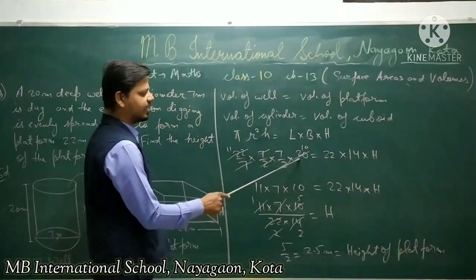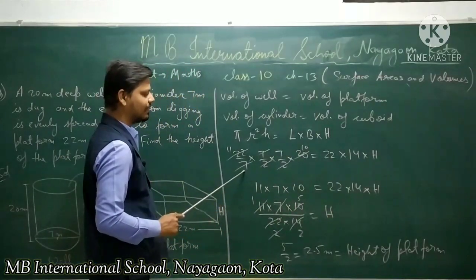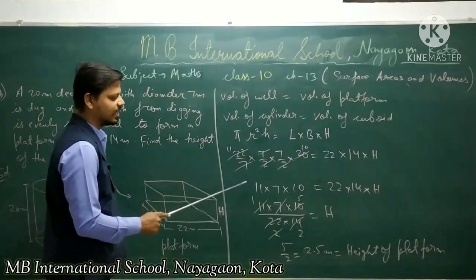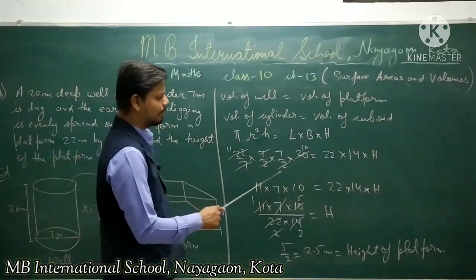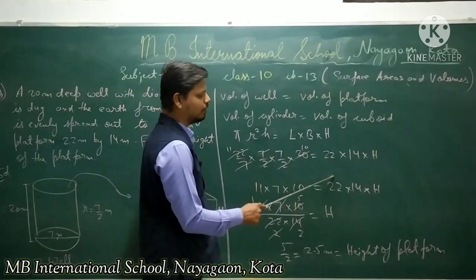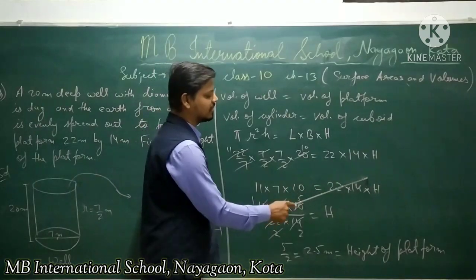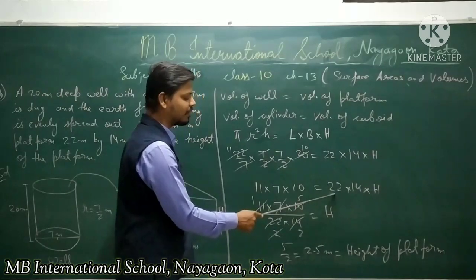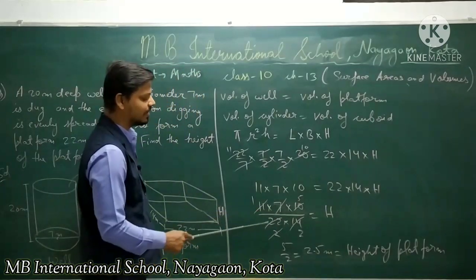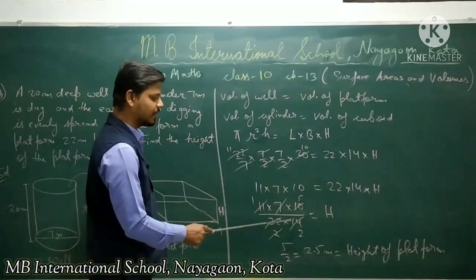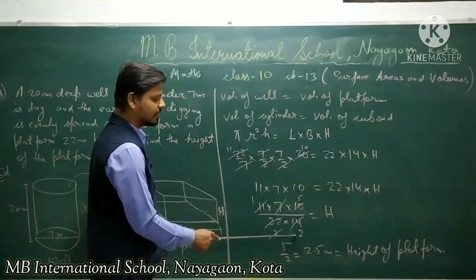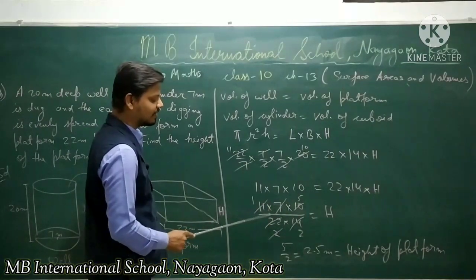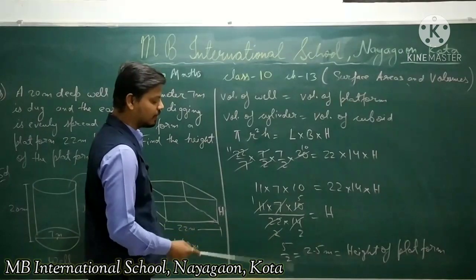Now simplifying: 2 and 20 cancel — 10 times. 7 and 7 cancel. 2 and 22 cancel — 11 times. So we are left with 11 times 7 times 10 on the left side, equal to 22 times 14 times H. Dividing both sides by 22 and 14: 7 and 14 cancel — 2 times. 2 and 10 cancel — 5 times. 11 and 22 cancel — 2 times.